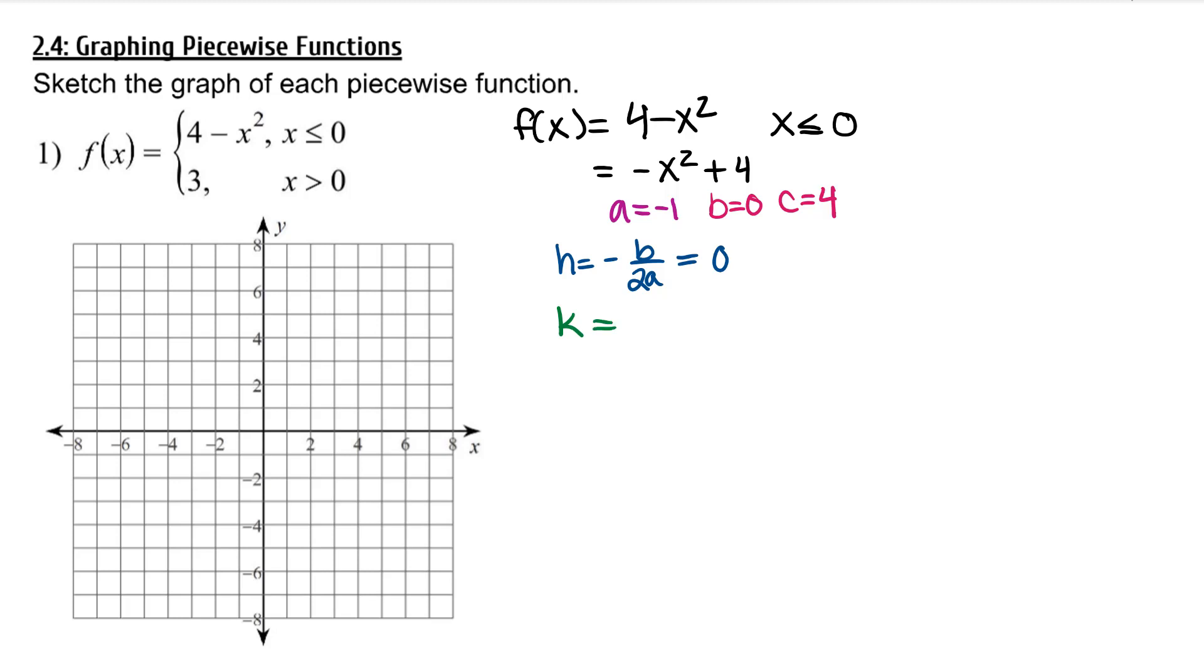To find k, I'll plug in 0 into this piece of the function. So the vertex of my first piece is 0, 4.